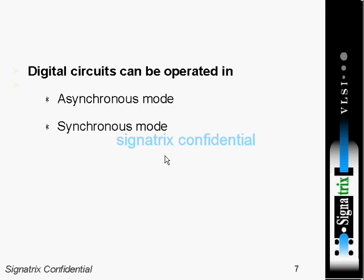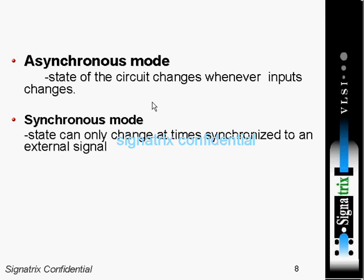Digital circuits can be operated in two modes: asynchronous mode and synchronous mode. In asynchronous mode, the state of the circuit changes whenever the input changes. In synchronous mode, the state can only change at times synchronized to an external signal — a global signal that is used to synchronize all the sequential elements in the circuit.